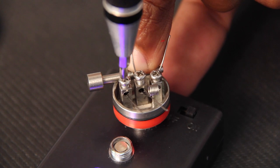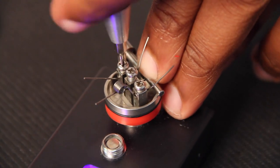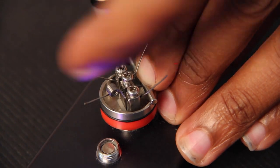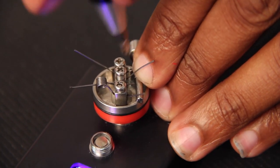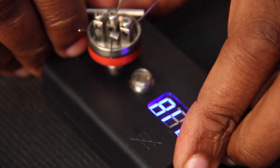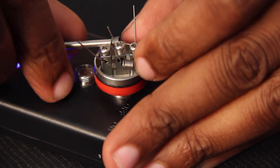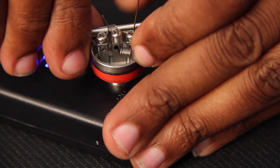And the thing about dual coils, guys, you always want to remember is when you're building dual coils, that first coil, the second coil needs to be an exact mirror image of that first coil. If it's not an exact mirror image of that first coil, you can end up having some issues that aren't good.